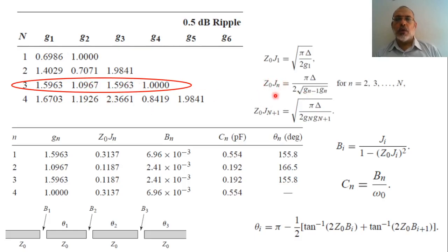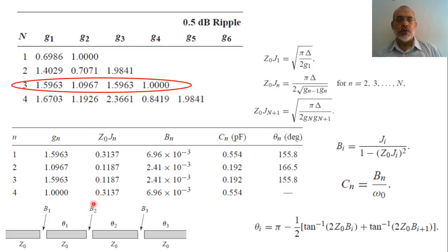We calculate the inverter values from G2 and G3 using this relation. Finally, G4 is determined by Z_0 · G_4 equals square root of delta over 2·G3·G4. By following these equations, we can obtain the values of all inverters Z_0·Gn, and by dividing by Z_0 we can calculate the inverter value Gn.